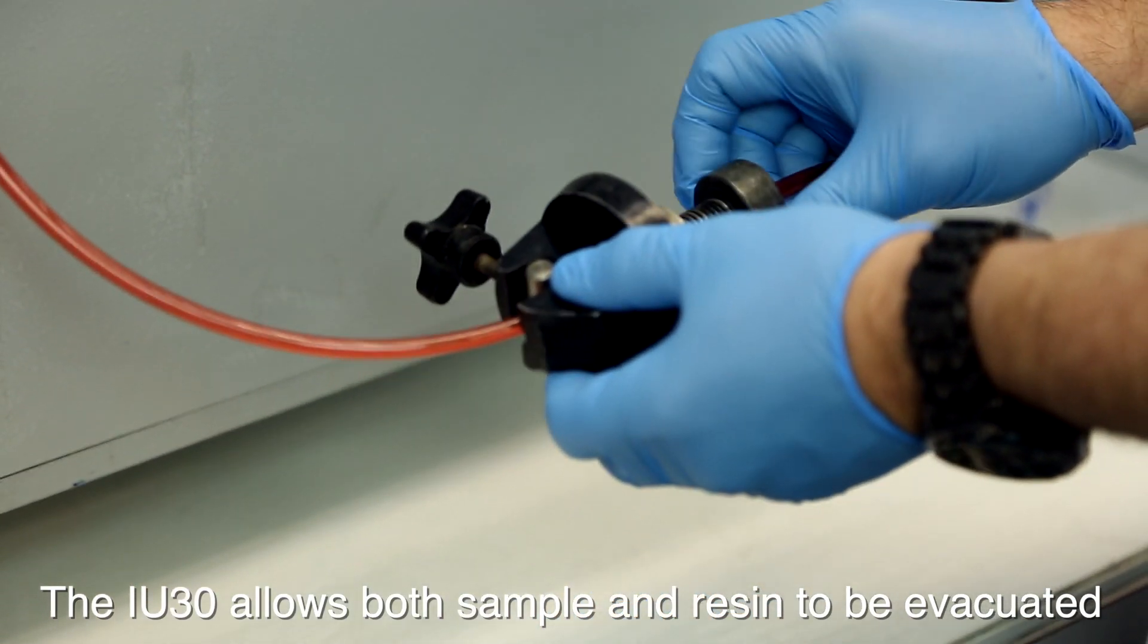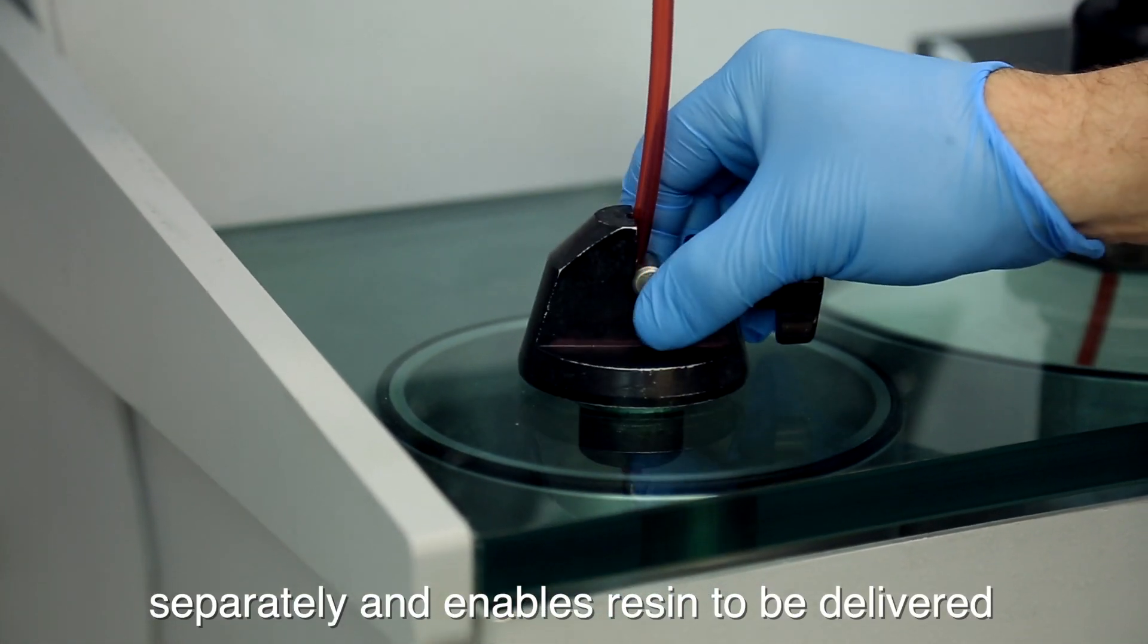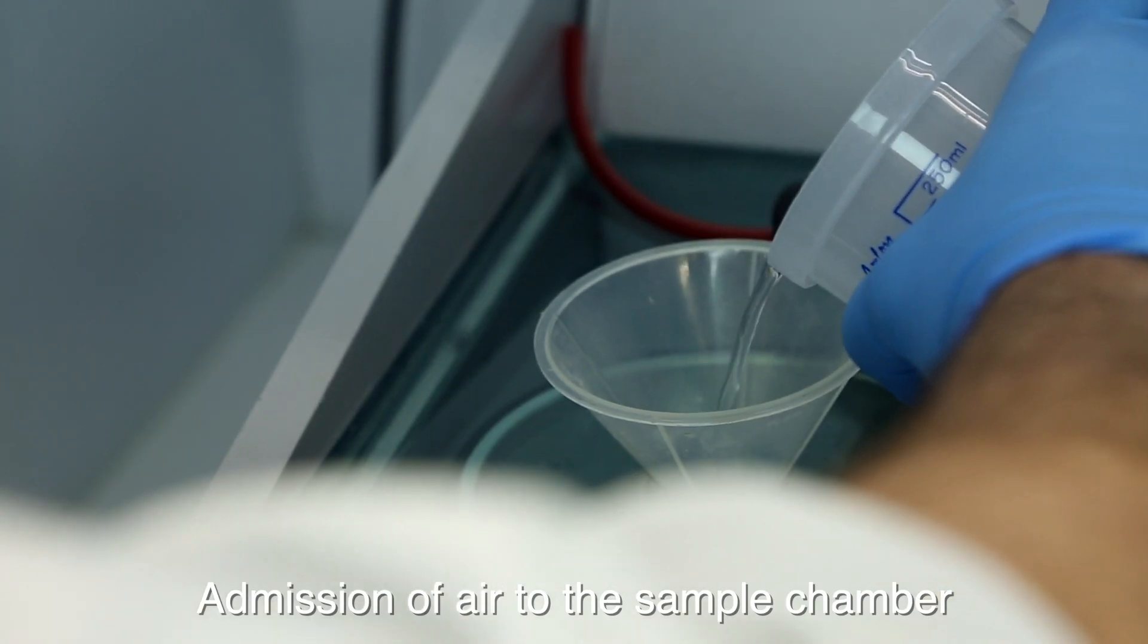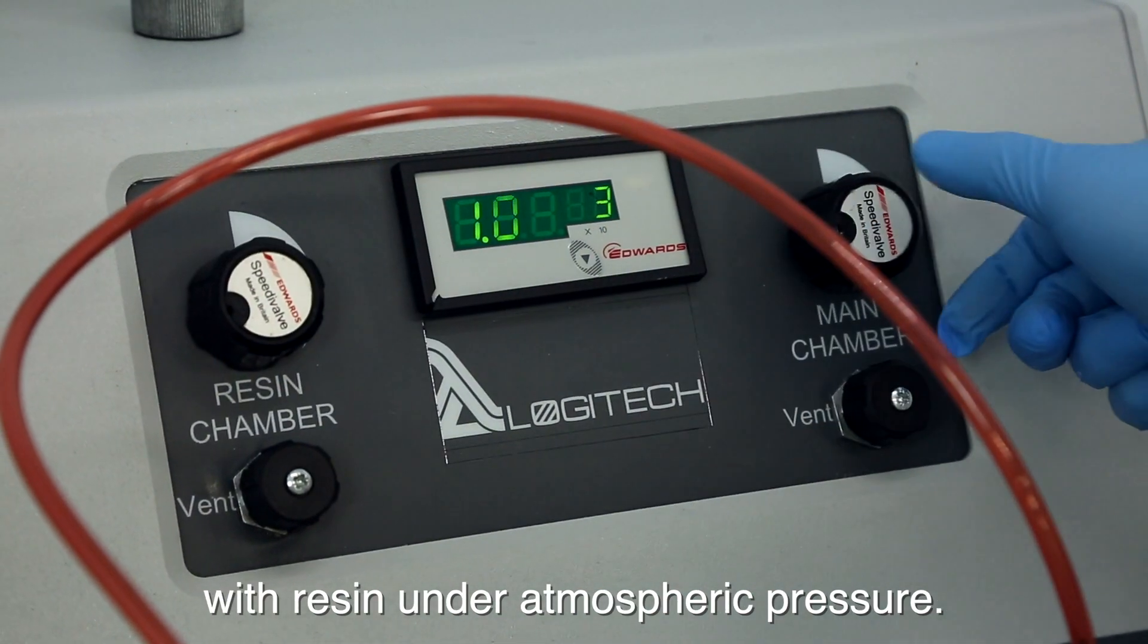The IU30 allows both sample and resin to be evacuated separately and enables resin to be delivered to the sample while both remain under vacuum. Admission of air to the sample chamber then causes the specimen to be impregnated with resin under atmospheric pressure.